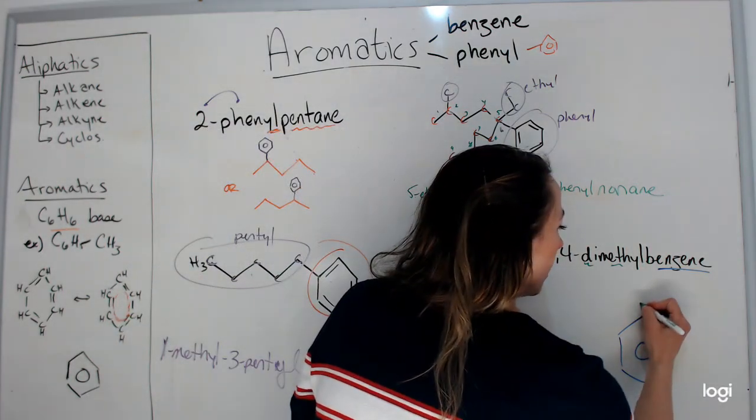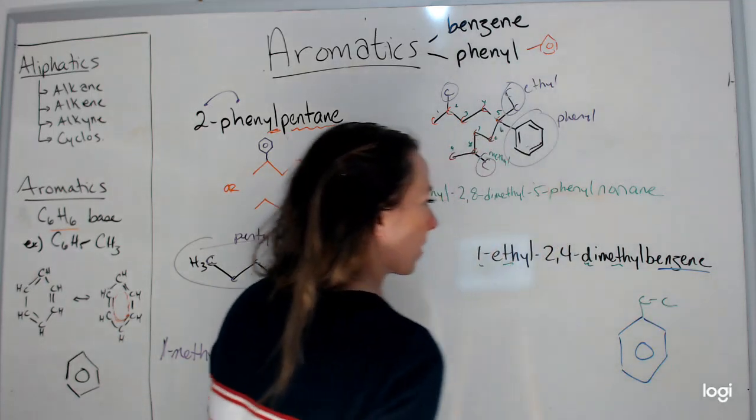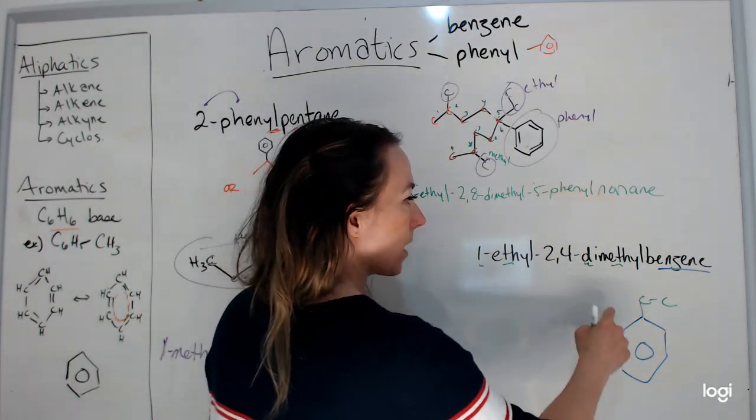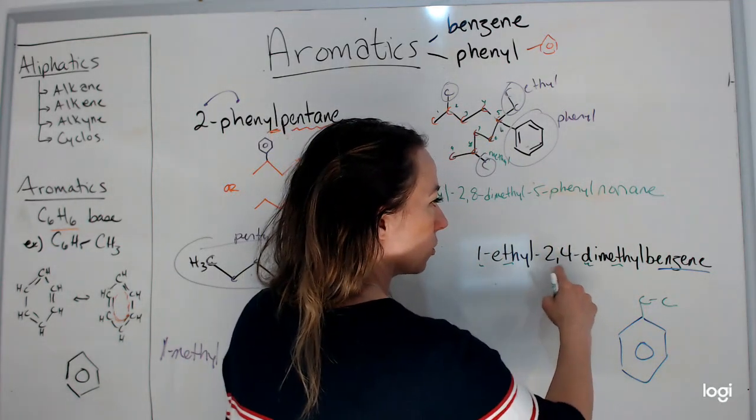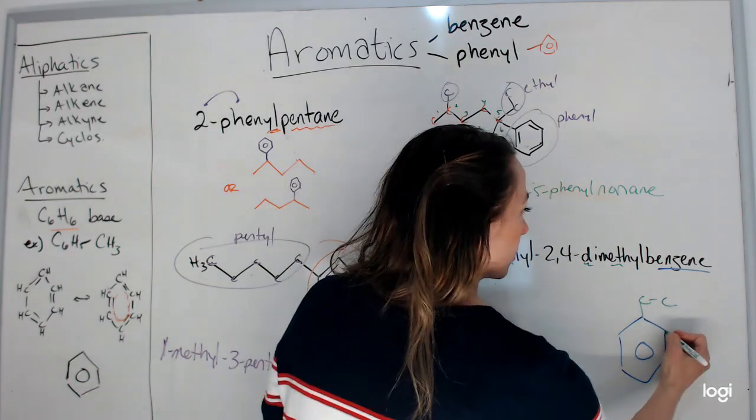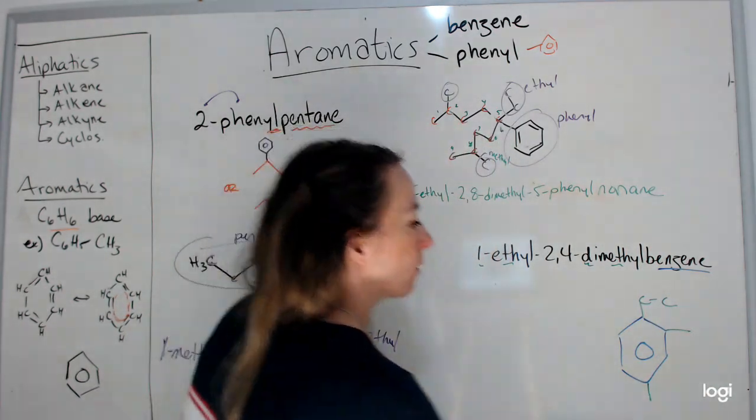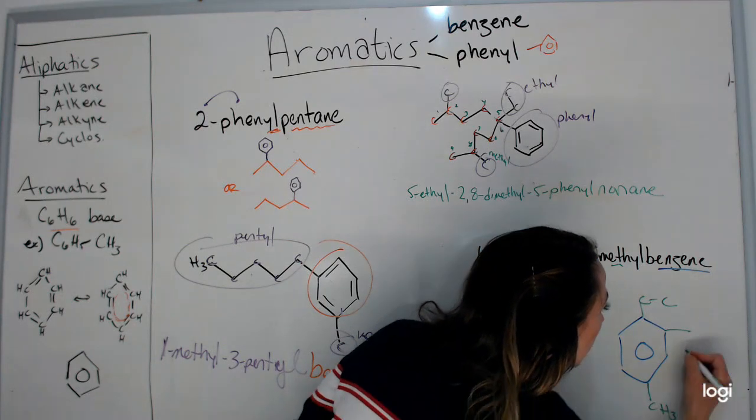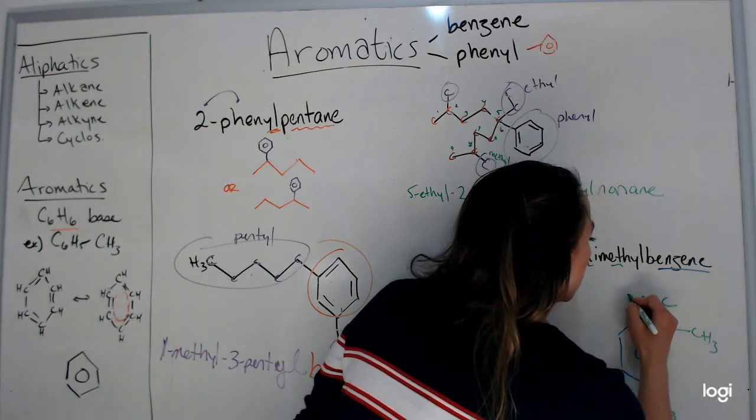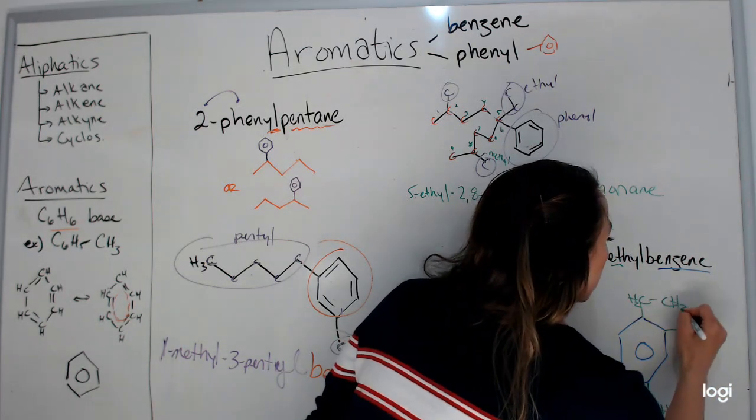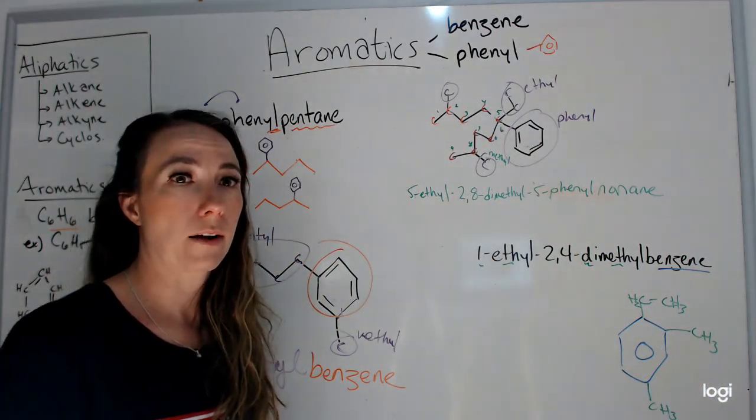Okay. So let's make this carbon one and let's go one, two for my ethyls. Let's make this a two, four. So let's make this carbon two, three, four for my diethyls, CH3, CH3, CH2, CH3. And that's that compound finished.